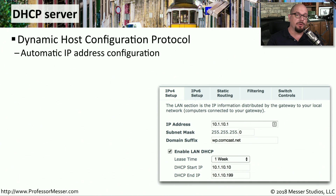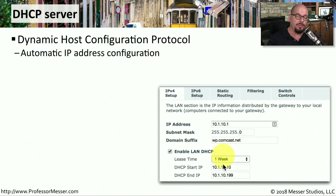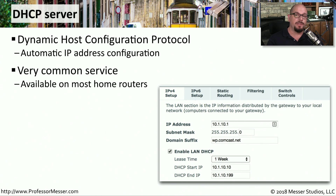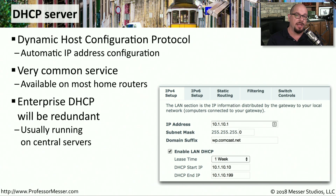If you turned on your computer and were able to get access to the network without any additional configuration, you're probably using DHCP — the Dynamic Host Configuration Protocol. This protocol automatically configures the IP addressing for your device. Almost every small office or home office router has a DHCP server inside it, and in an enterprise you probably have multiple DHCP servers handling configurations for all of your enterprise devices.